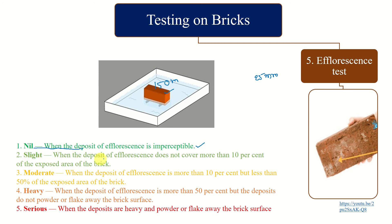It will be slight when the deposit of efflorescence does not cover more than 10% of the exposed area of the brick. You can see some patches here and there very less. It will be moderate when the deposit is more than 10% but less than 50% of the exposed area of brick.